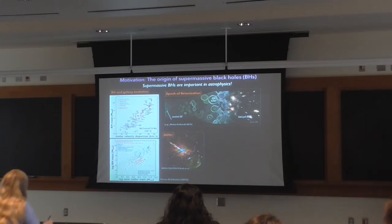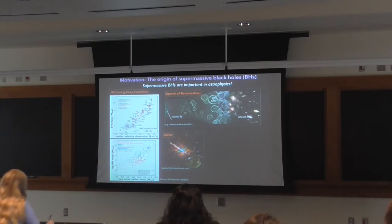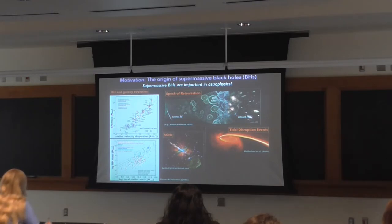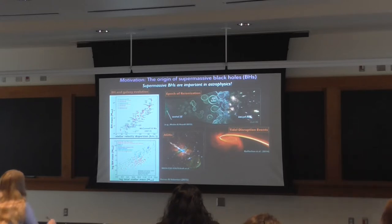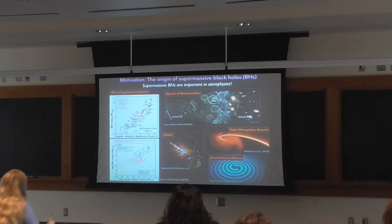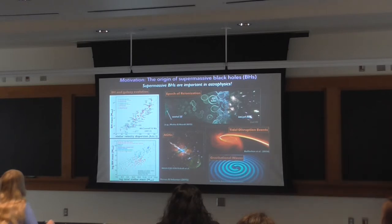Along with the first stars and galaxies, accreting black holes in the early universe also likely contributed to reionization, when hydrogen went from neutral to largely ionized. These massive black holes can also rip stars apart in tidal disruption events, revealing otherwise quiescent black holes in distant galaxies. Finally, merging black holes are sources of gravitational waves — LIGO has detected gravitational waves from stellar mass black holes and neutron stars, and future experiments like LISA are expected to detect mergers of more massive black holes in galaxies.